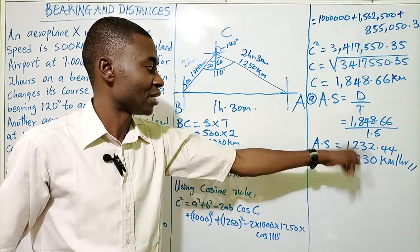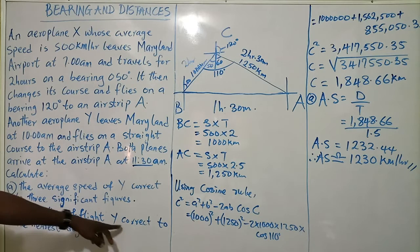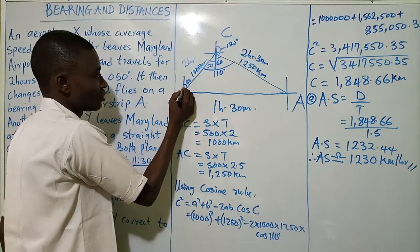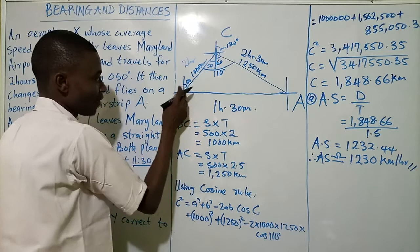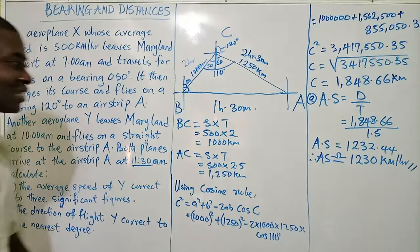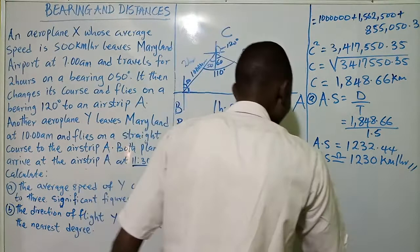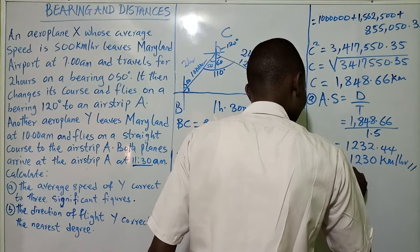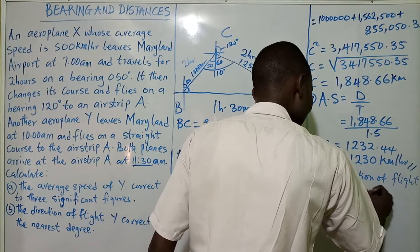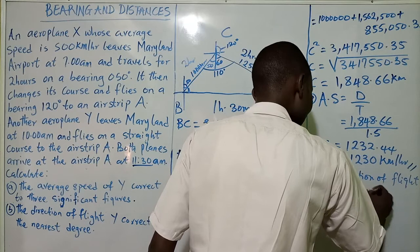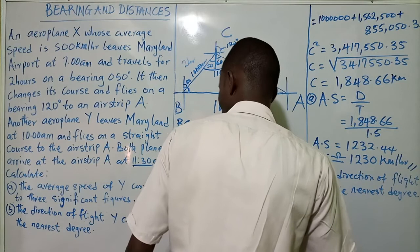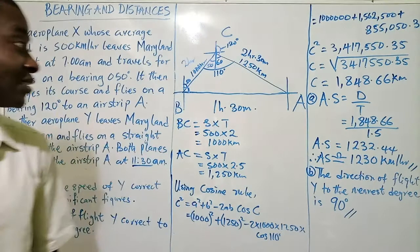Now for the direction of flight of Y correct to the nearest degree. Looking at the diagram, the direction of flight of Y goes from the origin — Maryland airport — straight to airstrip A. Examining the angle, this turns out to be 90 degrees. So the direction of flight of Y to the nearest degree is 090 degrees, and that is it — no complicated work needed there.